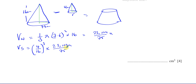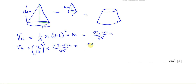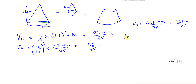The volume of the small cone can be found using the ratio of lengths: 4/16. Since I want the ratio of volumes, I cube this scale factor: (4/16)³ = (1/4)³. Multiplying by the big cone's volume gives the small cone's volume: 361π/75. The volume we want is 23104π/75 − 361π/75.